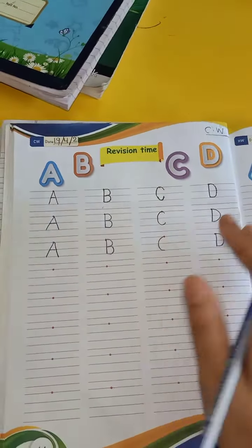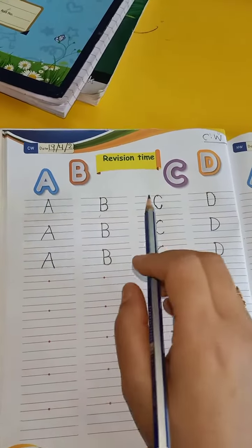So bachche, you have to first of all write the date here and homework on right side. So bachche, it's a revision time. So you have to do capital letter A to D.